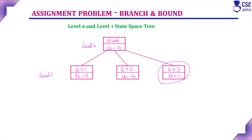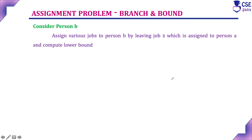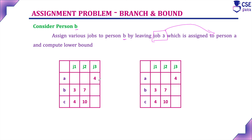Since job 3 is assigned to person A, the remaining jobs are job 1 and job 2. Next, consider person B. For person A, job 3 is fixed with cost 4. For person B, if assigning job number 1, its cost is 3. That row and column are removed, and only one job remains for person C, which costs 10. So the lower bound value here is 17.